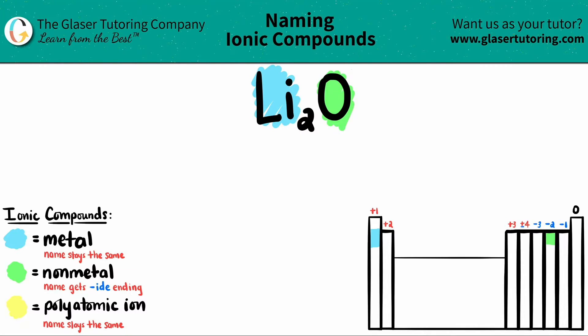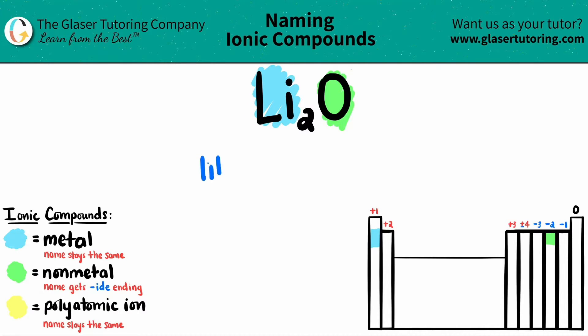So when we're naming ionic compounds, the metal name always stays the same. So Li would just be lithium.